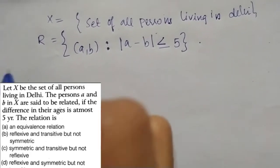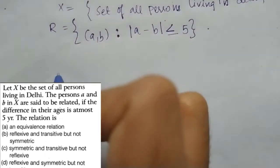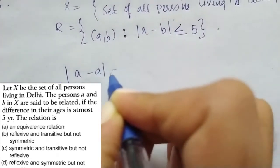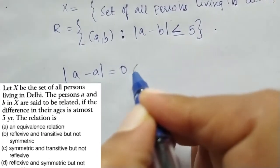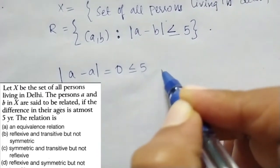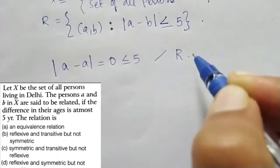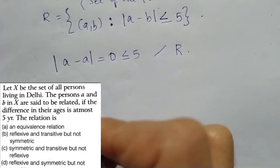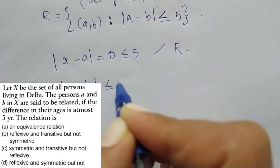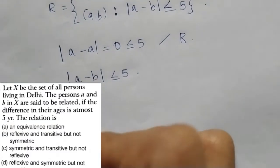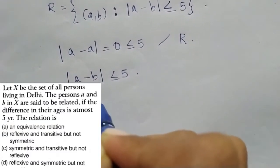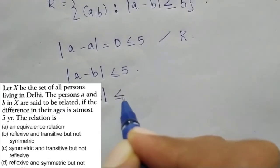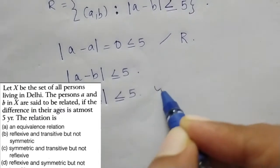For reflexivity: |a − a| = 0, and 0 ≤ 5. That satisfies reflexivity. For symmetry: if |a − b| = 5, then |b − a| = 5 because it is a positive modulus value. That is less than or equal to five. That is symmetric.